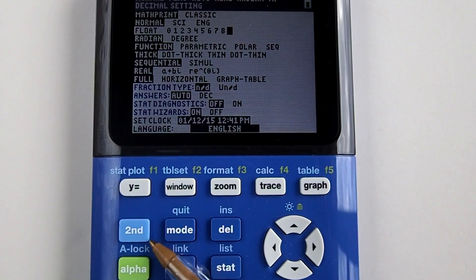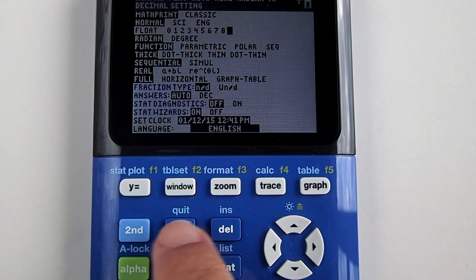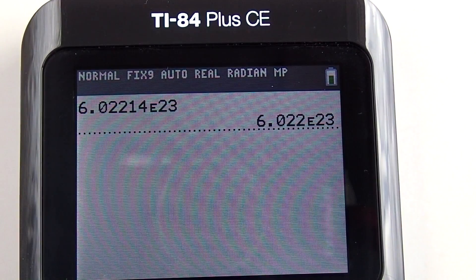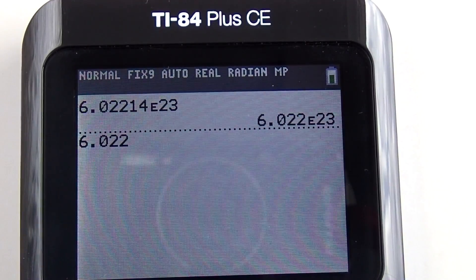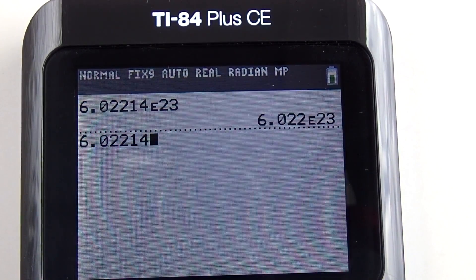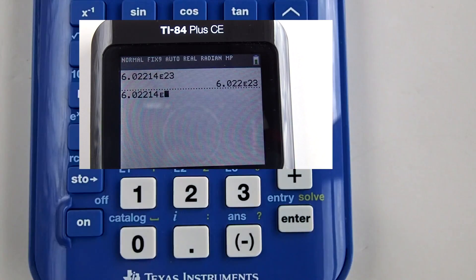Now go back to the home screen by pressing second mode. Let's re-enter our number again in scientific notation. 6.02214 second comma 23.